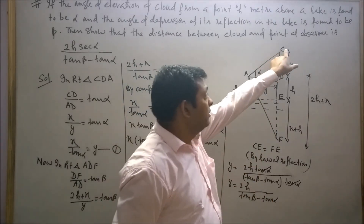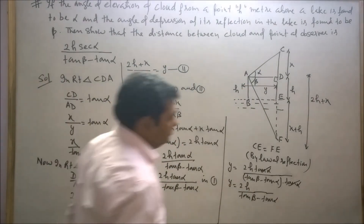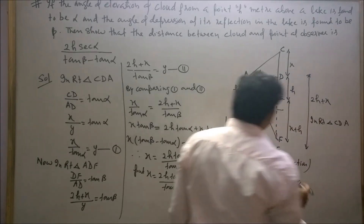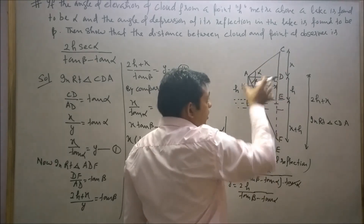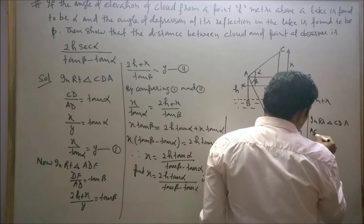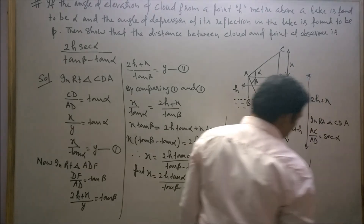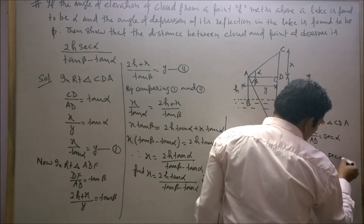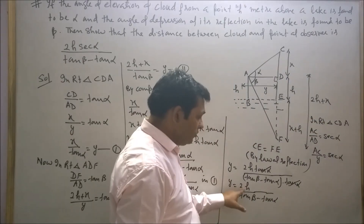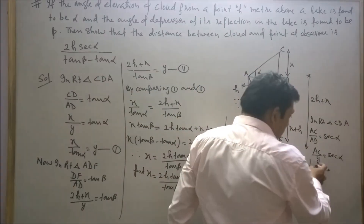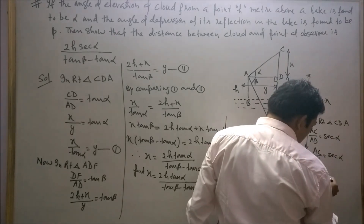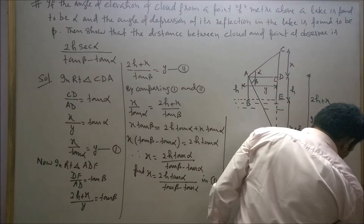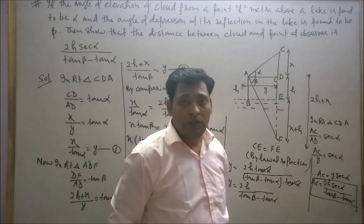Now consider right angle triangle CDA. In right triangle CDA, sec(α) equals AC upon AD. AC upon AD equals sec(α), and AD equals Y equals 2H upon (tan(β) minus tan(α)). Therefore AC equals Y·sec(α), which gives AC equals 2H·sec(α) upon (tan(β) minus tan(α)). This is the required distance between the point of observer and the cloud.